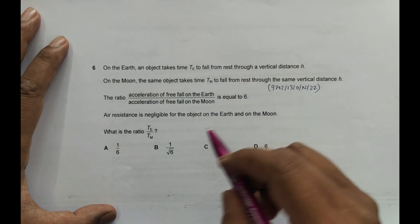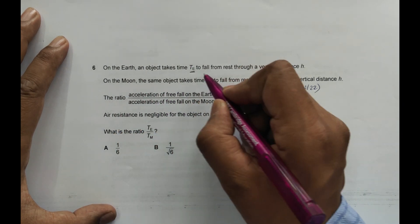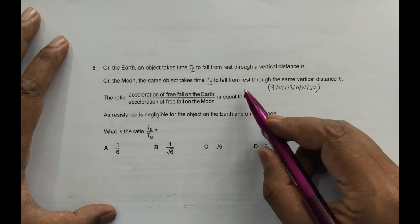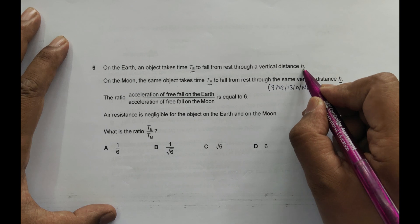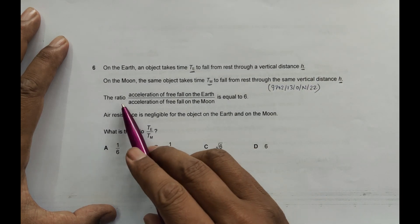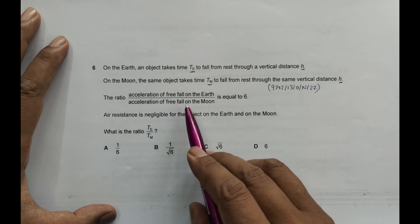On the Moon, the same object takes time Tm to fall from rest through the same vertical distance h. So this is h, same. The ratio of acceleration of free fall on the Earth to acceleration of free fall on the Moon is equal to 6.